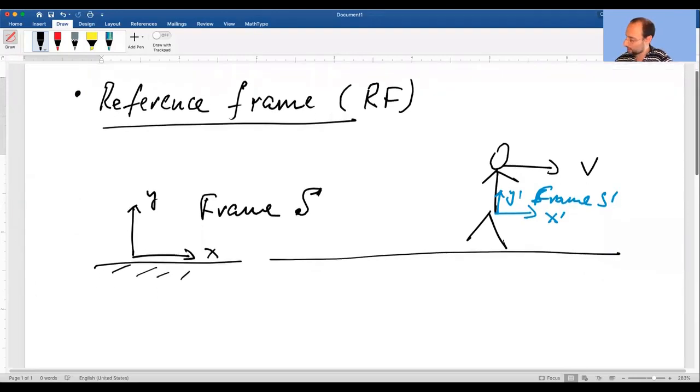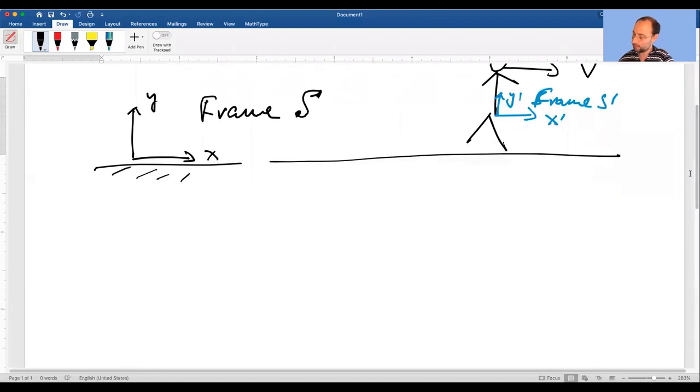The next term is a little bit more advanced. It's called inertial reference frame. So what is an inertial reference frame? Different texts will define it differently depending on the level.